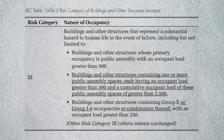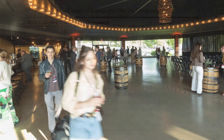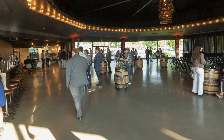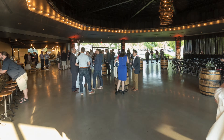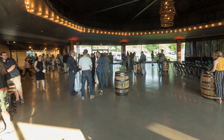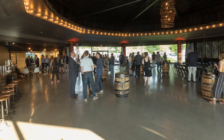The second section is risk categories of assembly spaces. They added a description in risk category three for occupancy: buildings and other structures containing one or more public assembly spaces, each having an occupant load greater than 300 and a cumulative occupant load of these public assembly spaces of greater than 2,500.